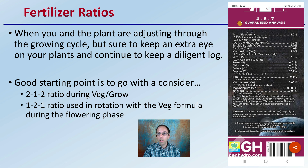Where do you get these ratios? You look at the guaranteed analysis, which gives you your nitrogen, phosphorus, and potassium values. Also keep in mind that many fertilizers are including a micronutrient blend as well.